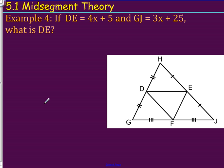Now, to get a little bit more complicated and involve some algebra into our geometry lesson, we have, if DE equals 4X plus 5 and GJ equals 3X plus 25, what is DE?